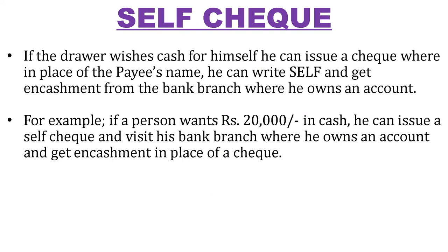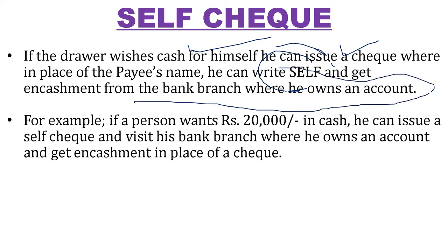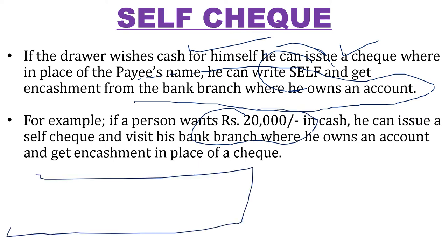Next is the self check. If the drawer wishes cash for himself, he can issue a check where in place of the payee name, he writes 'self'. This is a very common check. If you want cash for yourself rather than paying someone else, you write 'self' on the check, then write the amount in words and numbers, and sign it. This is called a self check and can be encashed at your own bank branch. For example, if someone needs ₹20,000 in cash, they write 'self' on the check, sign it, take it to the bank, and it can be immediately encashed.